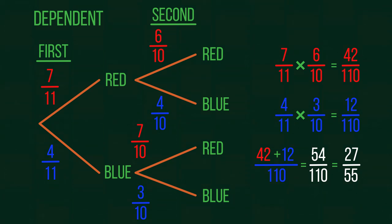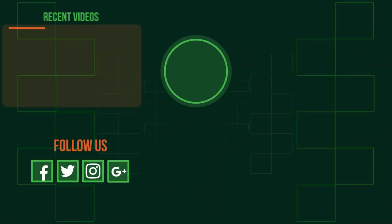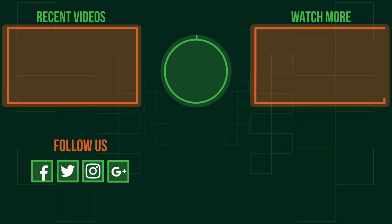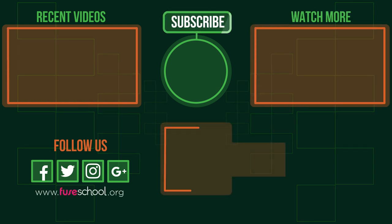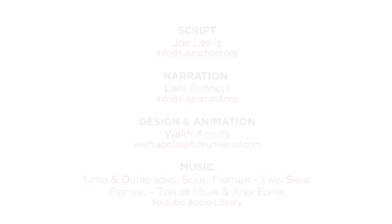So there is our guide to tree diagrams. These can be used for multiple events, not just two. And always remember to check and see if the second event is dependent on the outcome of the first. If you liked the video, give it a thumbs up. And don't forget to subscribe. Comment below if you have any questions. Why not check out our Fusco app as well? Until next time.